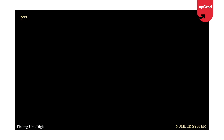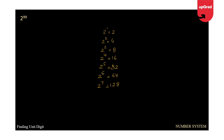Let me write some powers of certain numbers. 2 to the power 1 is 2, 2 to the power 2 is 4, 2 to the power 3 is 8 — remember, we are writing powers, not tables. 2 to the power 4 becomes 16, 2 to the power 5 becomes 32, 2 to the power 6 gives 64, 2 to the power 7 is 128, 2 to the power 8 gives 256, and so on. Similarly, let me write the powers of 3.